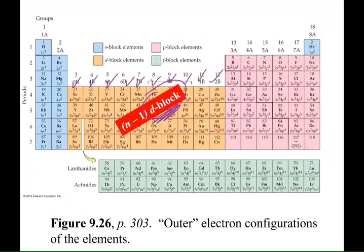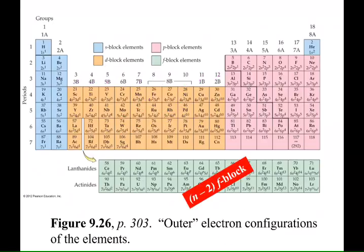And the type of subshell we didn't talk about yet is the f-type subshell. All these elements down here, the lanthanide elements and the actinide elements, they are all considered f-block elements. So as we scoot across and find homes for electrons, the last subshell they'll be added to are f-type subshells.